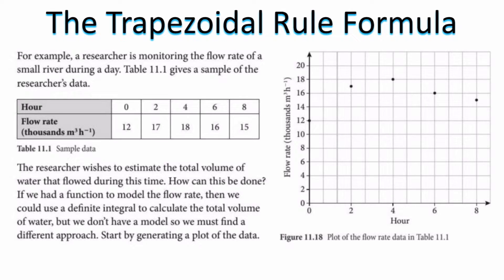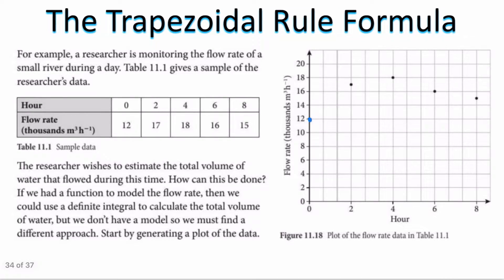If you look on your right-hand side, you have this scatter plot. At time zero, you have 12 as your flow rate in thousands of cubic meters per hour. Then after the second hour, you have 17. After the fourth hour, 18. Sixth hour, 16. And on the eighth hour, the flow rate is 15,000 cubic meters per hour. If I were to connect all of these points with a smooth curve, the question would be: what is the area under this curve?